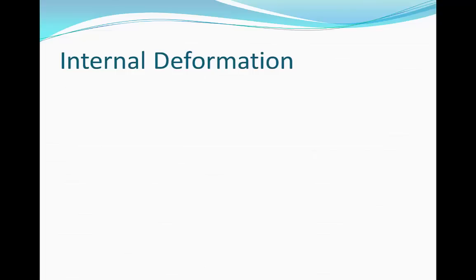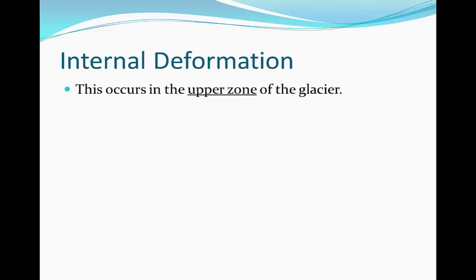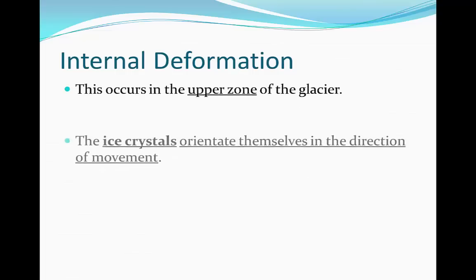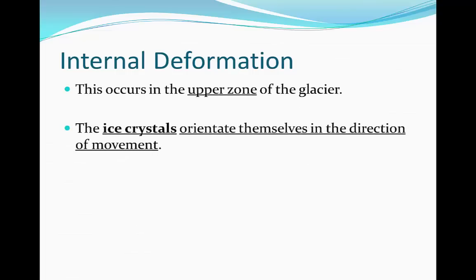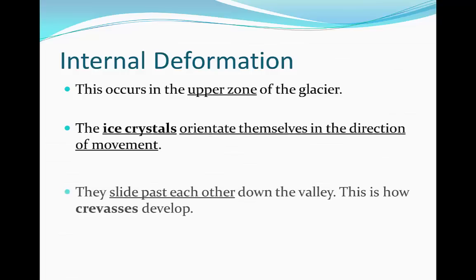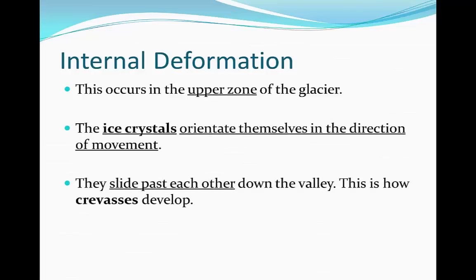Internal deformation occurs in the upper zone of a glacier. The ice crystals inside the upper zone of the glacier orientate themselves and point in the direction of movement. They then slide past each other as they go down the valley. This is how crevasses develop — crevasses are cracks in the glacier.